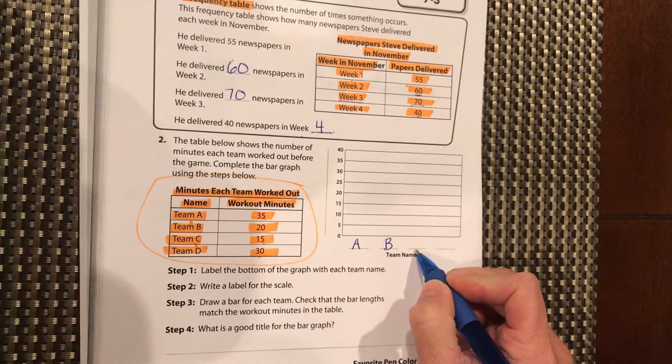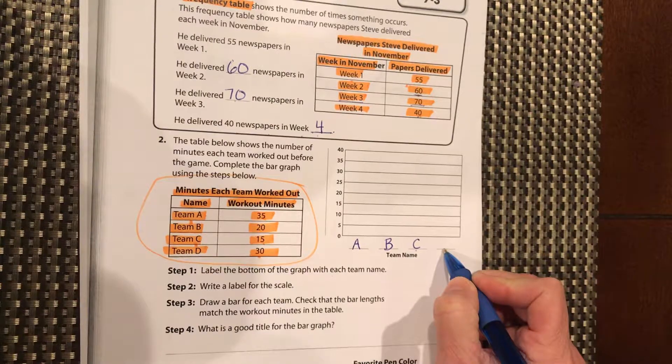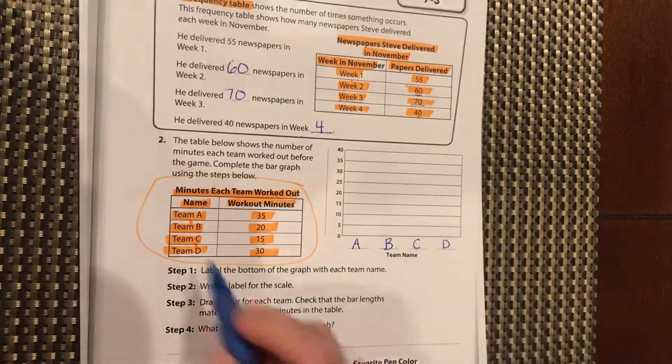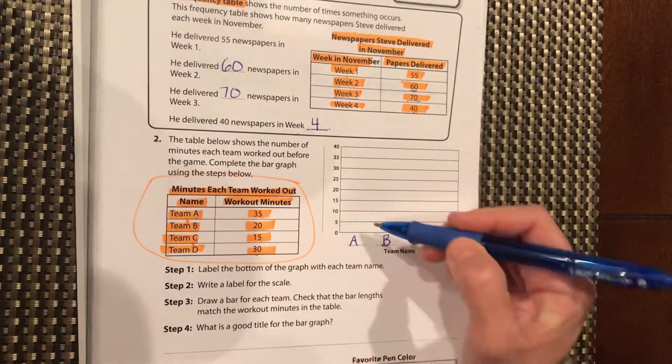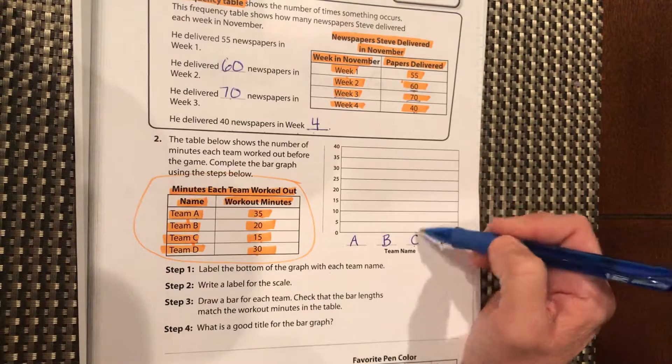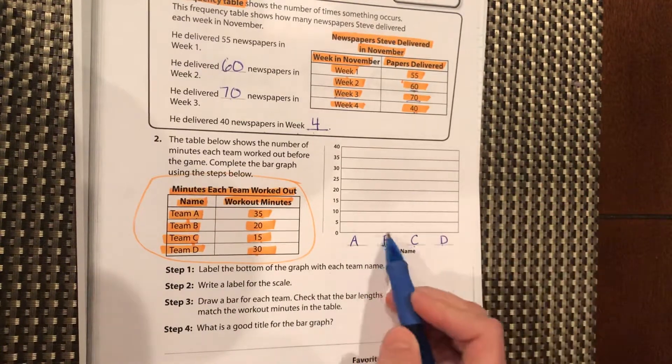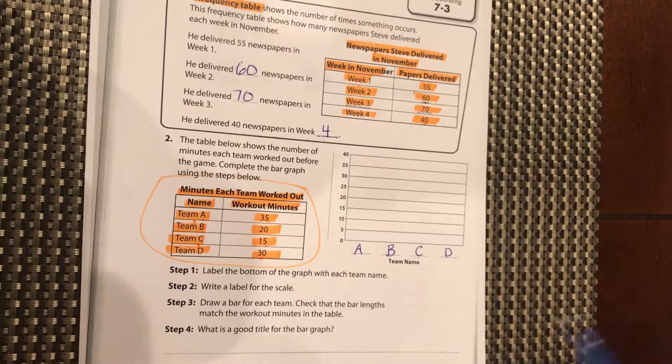What do you think you should put here? And then what do you think you should put here? Good. So we have team A, B, C, D. This is going to be team A's bar right here, team B, team C, and team D. We're going to have four different bars that are going to go up for each individual team.